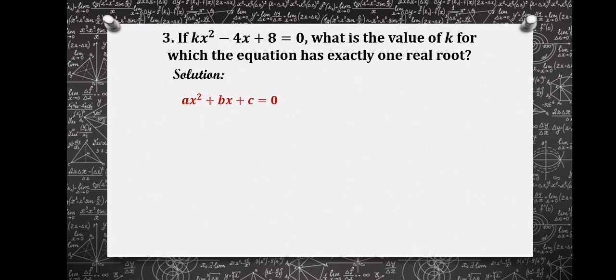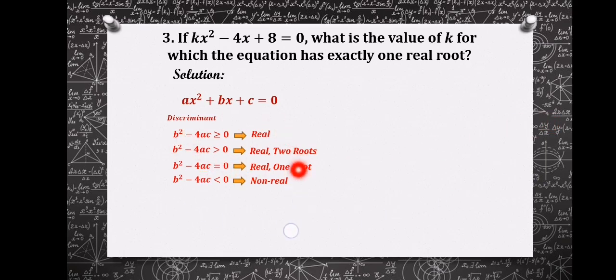The discriminant b² - 4ac determines the corresponding nature of each root. According to the problem, the equation must have exactly one real root, therefore its discriminant should be b² - 4ac = 0.